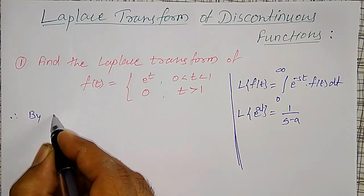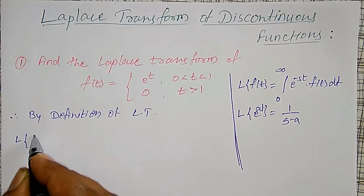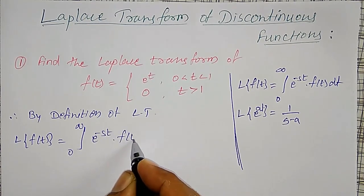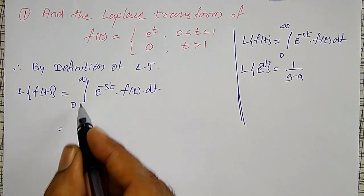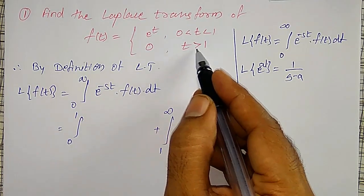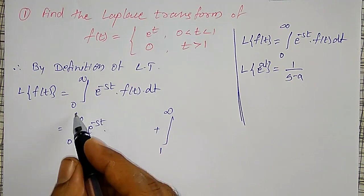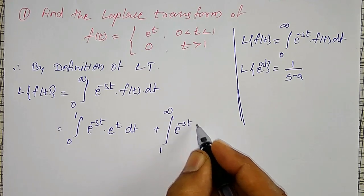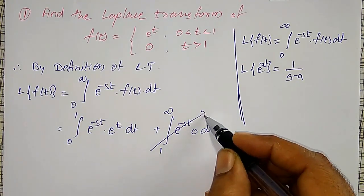By the definition of Laplace Transform, L{f(t)} = integration from 0 to infinity of e^(−st) f(t) dt. Since f(t) is defined in two ways, I will split this integration as 0 to 1 and 1 to infinity. From 0 to 1, f(t) = e^t, and from 1 to infinity, f(t) = 0. The second integral, being 0 times anything, becomes 0.